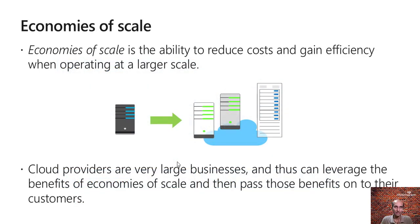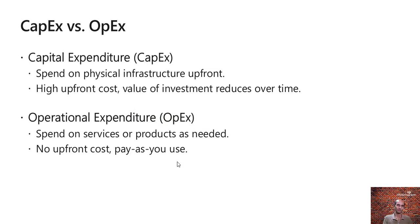Another term that you will encounter is economies of scale. It is the ability to reduce cost and gain efficiency when operating at a very large scale. In terms of economies of scale, there are two terms involved: one is capital expenditure or CapEx, and another is operational expenditure or OpEx. If you want to have your on-premise data center, you will have to spend on the infrastructure upfront, and as an organization you will be responsible for the maintenance, security, access, and the infrastructure application data end to end.